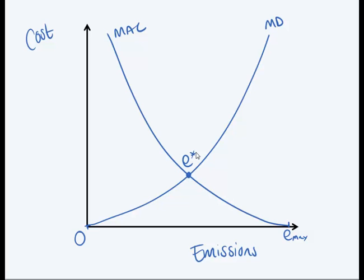So at E star, an emissions of E1 and the cost of, let's call it C1, it would be socially efficient because the total cost, meaning total abatement cost plus total damages will be minimized. If we are at E1, this green block over here shows my total damages, the total damages due to pollution on the society.